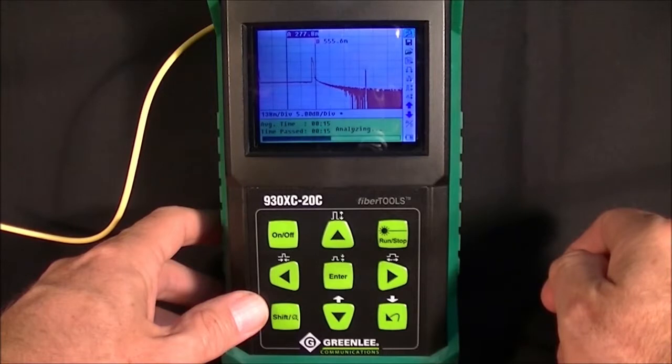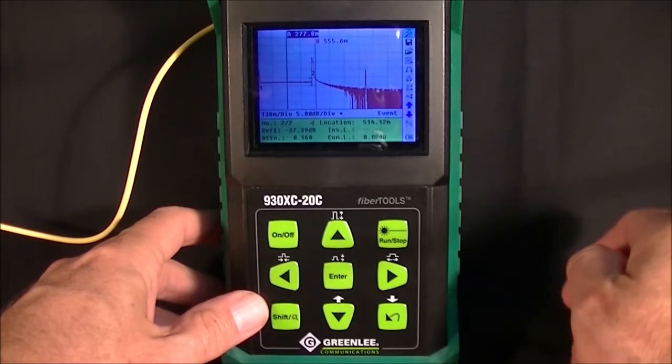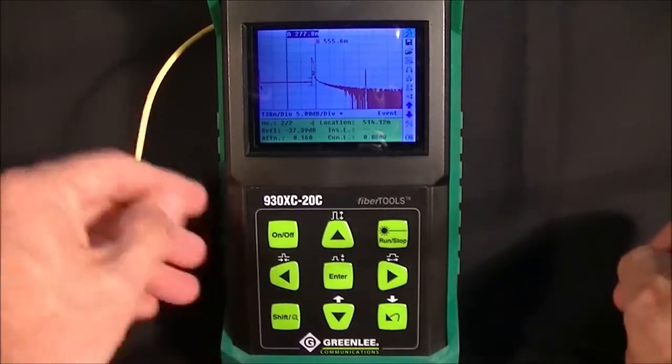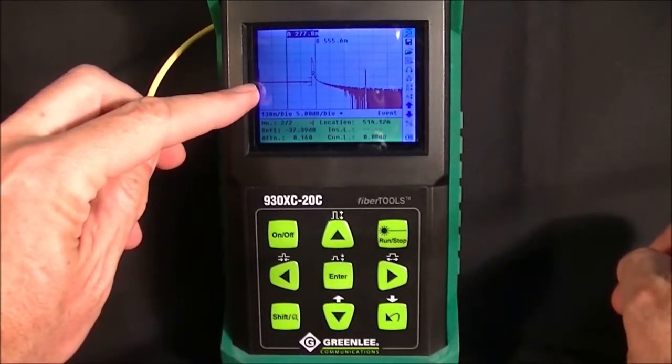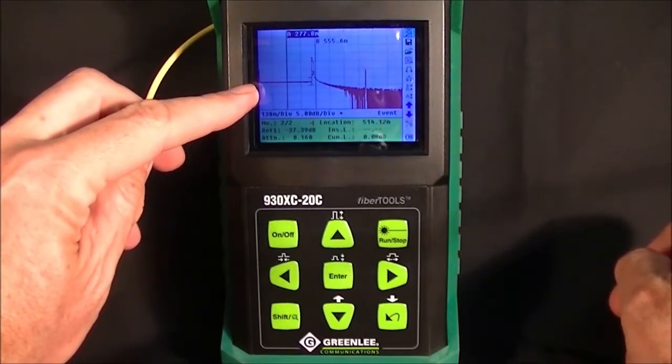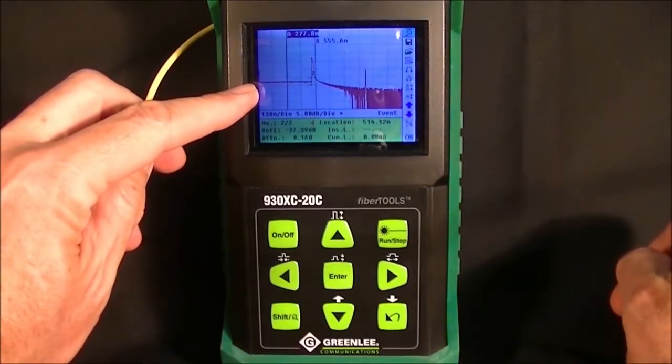The OTDR will now analyze the trace and you can see that the analysis shows that the bulkhead is here at the far left hand side, annotated with event number one which is time equals zero or zero meters.